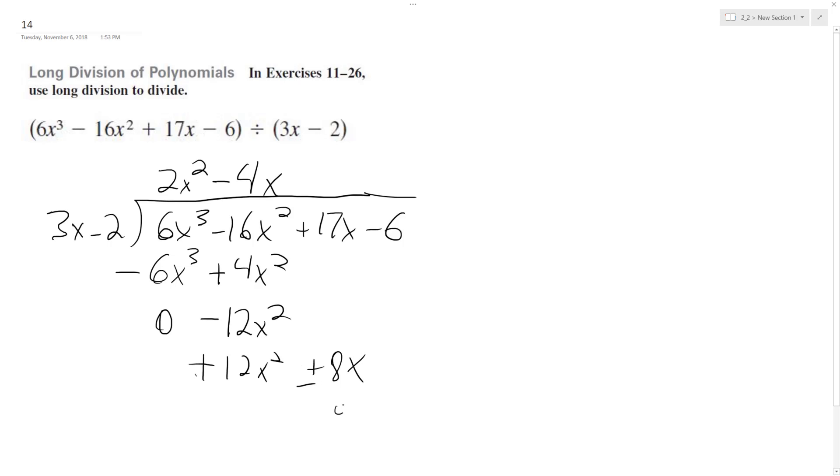And then we get 9x out, positive 3. Switch the signs again, and we get a remainder of 0.